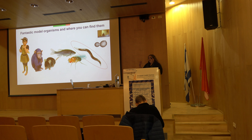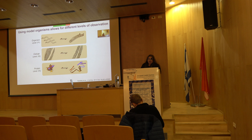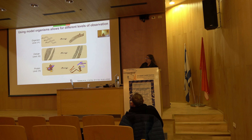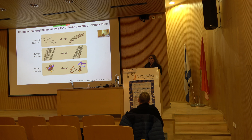One more advantage: C. elegans is transparent, meaning we can look inside living animals and see exactly what's going on. When working in this model system — and I think it's probably a general concept — you can work at different hierarchies or levels of complexity, and each level can give you different things in terms of what you're trying to get from the experiment.